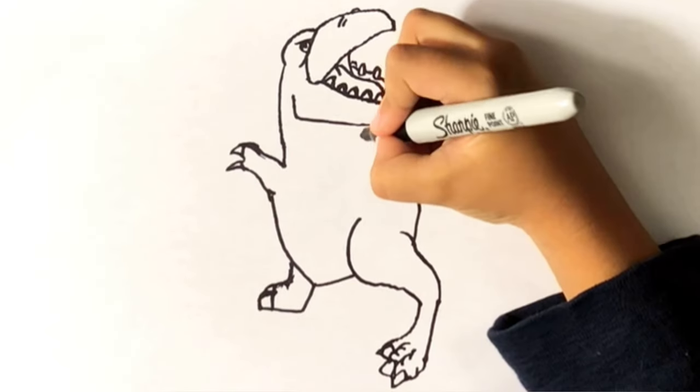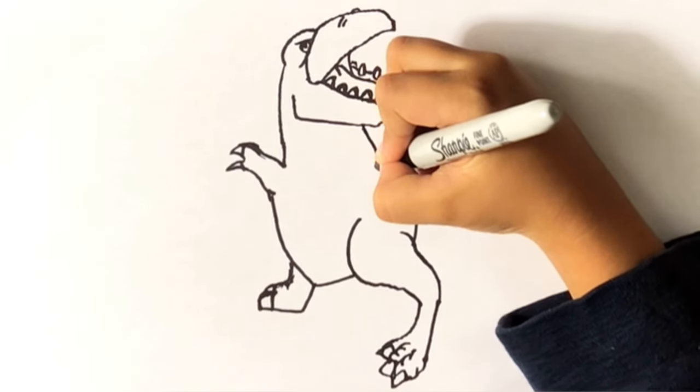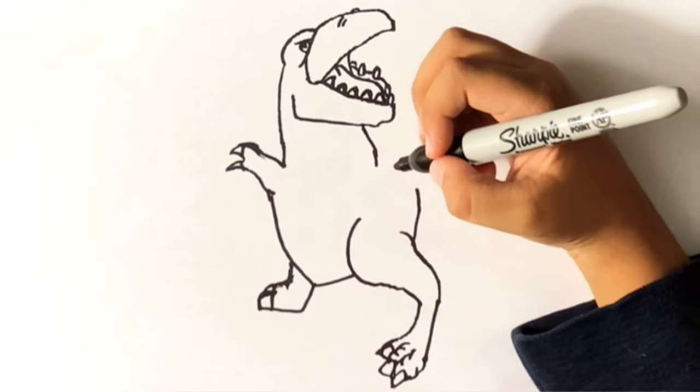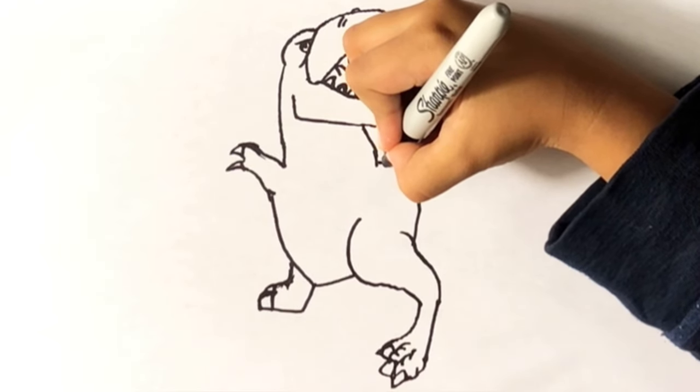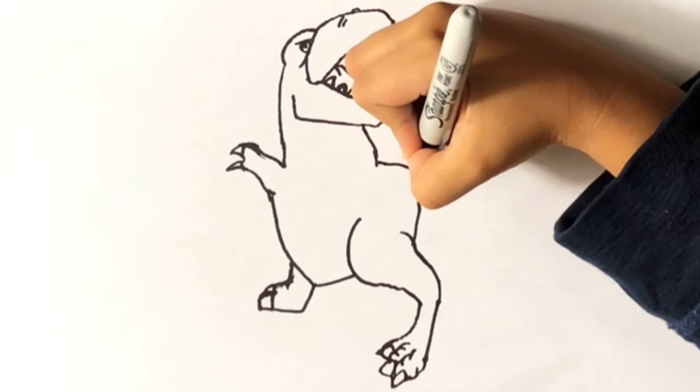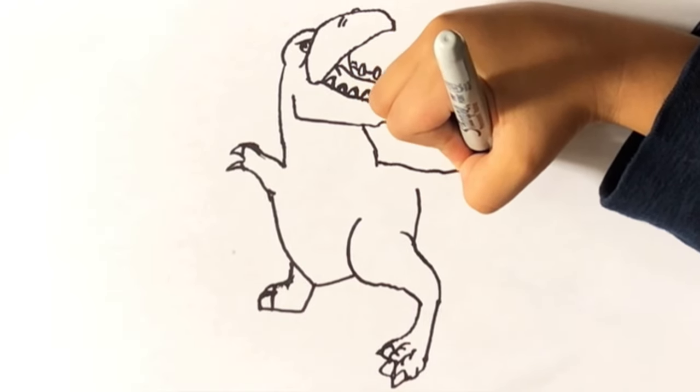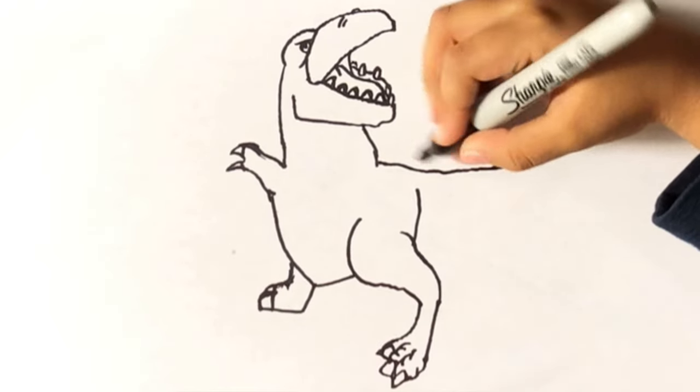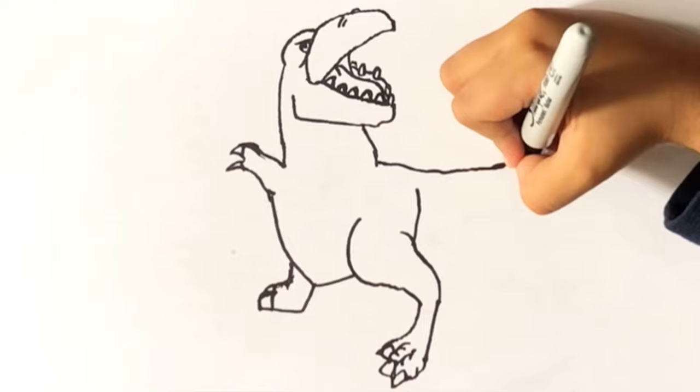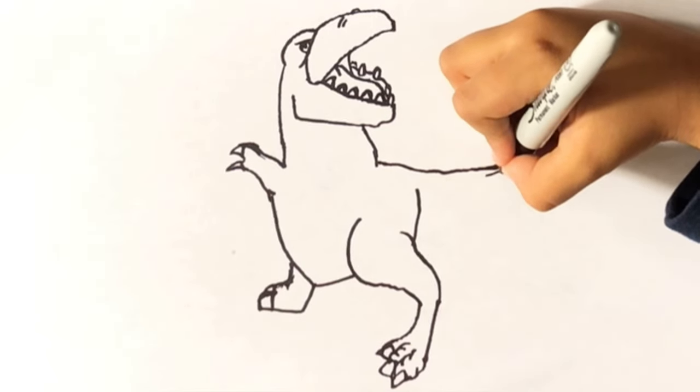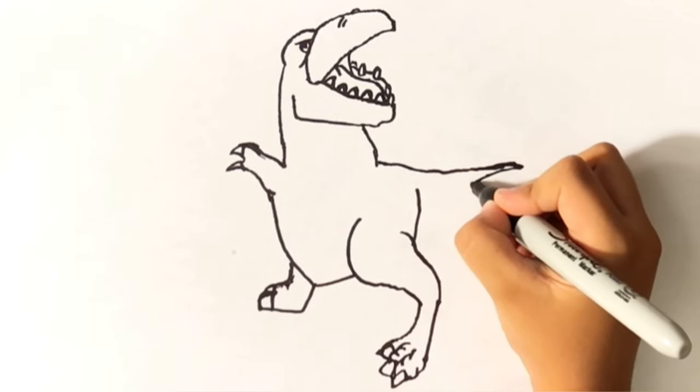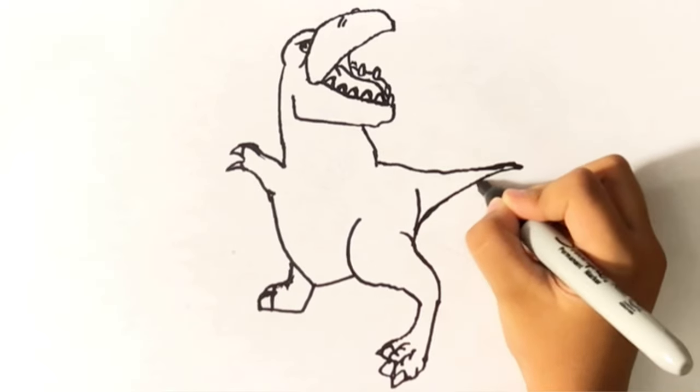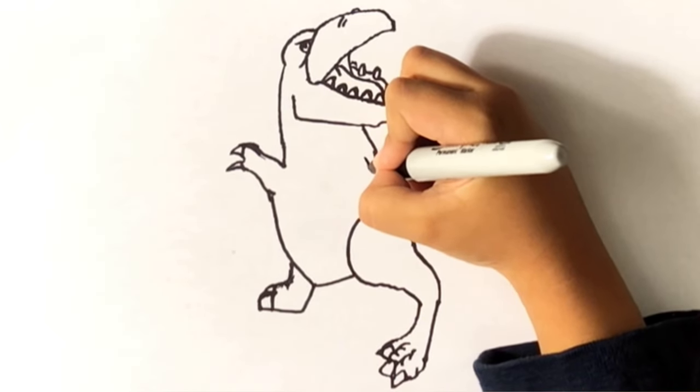We're almost done, but you need to color. That's his neck right there. We're going to draw his other arm when we're done with his thick tail. Looking for spikes when we're done coloring. Okay, we're going to make his other arm.